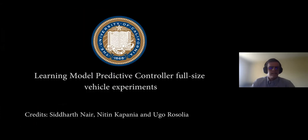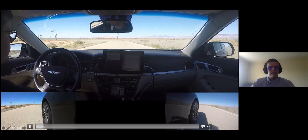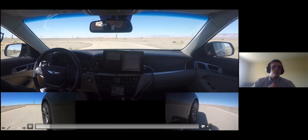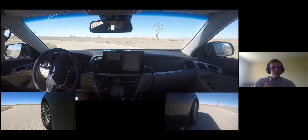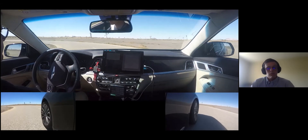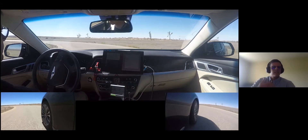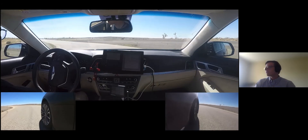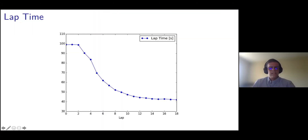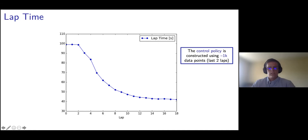We tested exactly the same controller on the California proving ground — a test track we share with Hyundai in Southern California. We first collected data using a simple path-following controller tracking the center line at a low speed of eight meters per second, and then iteratively updated our controller using all the experimental data. This figure shows the lap time on the y-axis versus the number of laps on the x-axis. We first performed three laps of path following, then used historical data to iteratively update our control policy until we converged to a steady state behavior. At any time, the control policy is constructed using only 1,000 data points — essentially the data points associated with the two best laps.